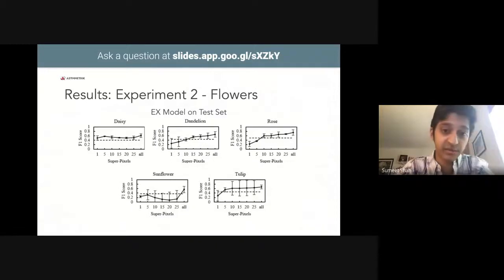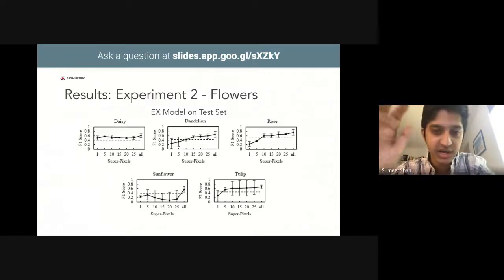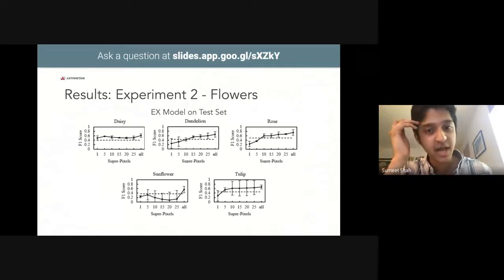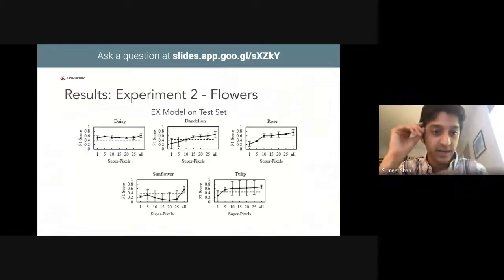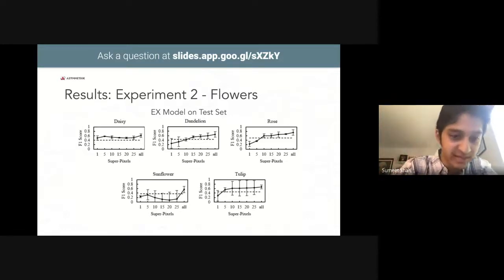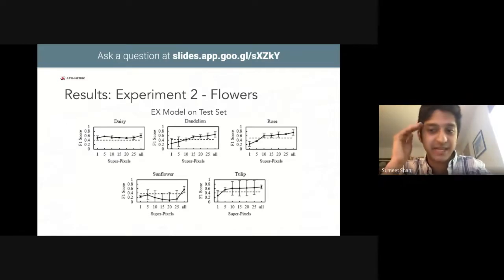Here we see the performance of all of the flowers EX models. For daisies, the EX models are able to classify daisies almost as well as the secondary model, indicating that even one superpixel explanations contain most of the salient information to represent the class of daisies. A manual examination revealed that one superpixel daisy explanations mostly focus on the segments of the images containing the pistil and some of the petals. The performance of the EX models on the sunflower images is very unusual. Increasing the number of superpixels past five in the EX models causes a significant drop in performance.